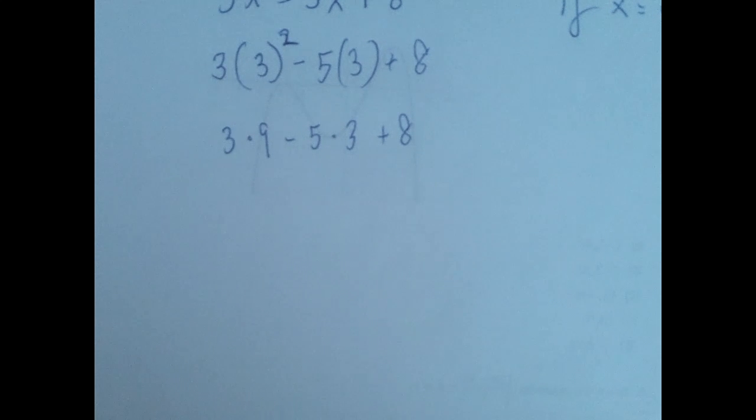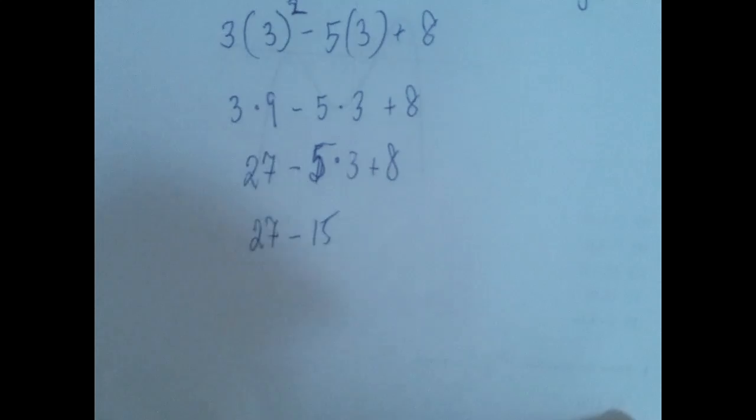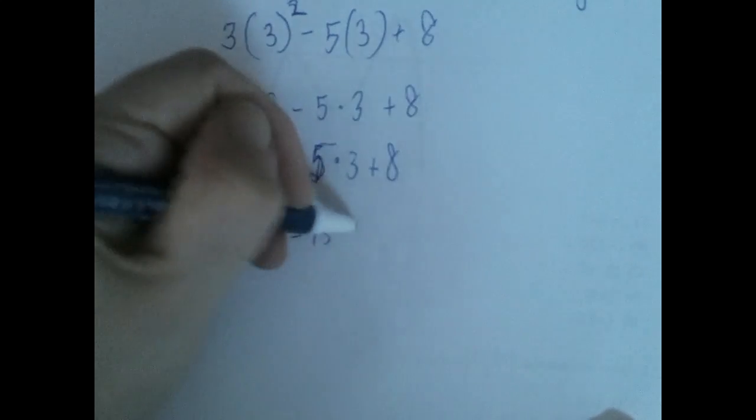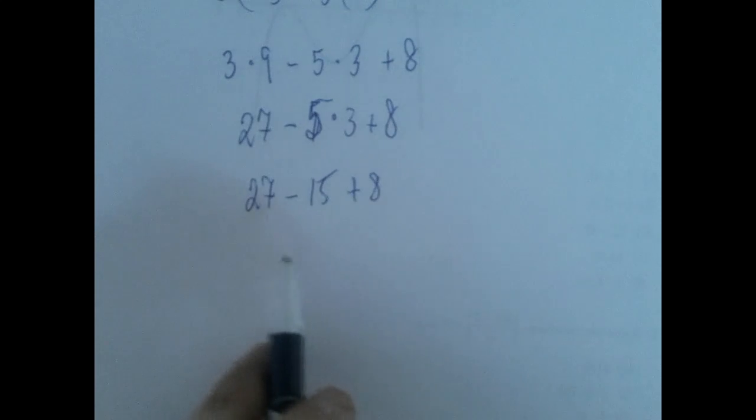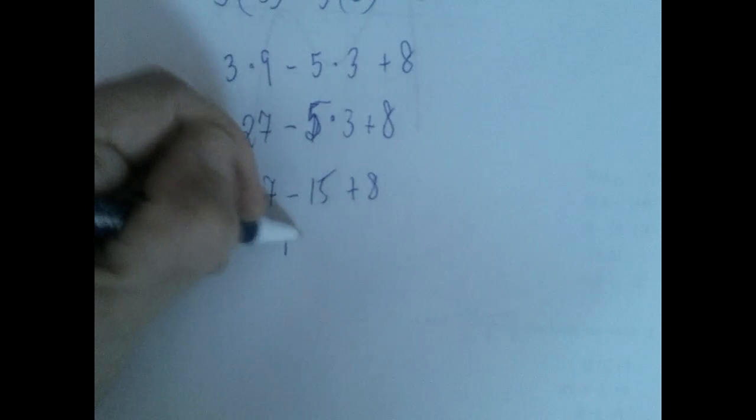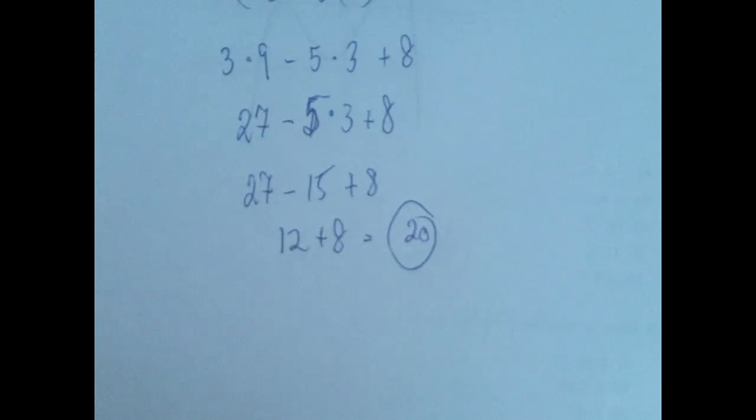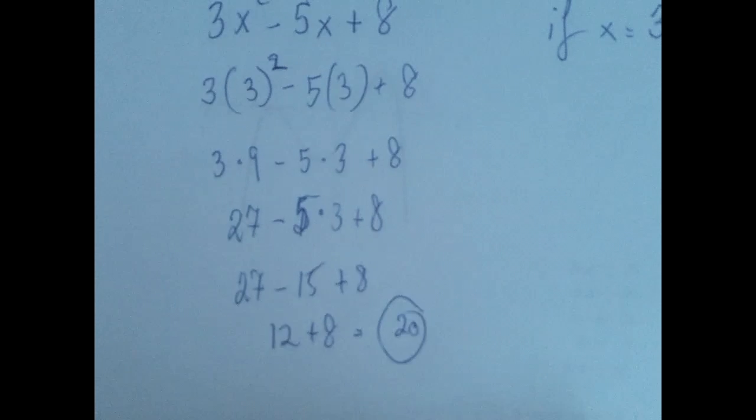And now multiplications left to right. 3 times 9 is 27. 5 times 3 is 15. And now additions and subtractions left to right. 27 minus 15 is 12. And 12 plus 8 is 20. So this expression is 20 when x is 3.